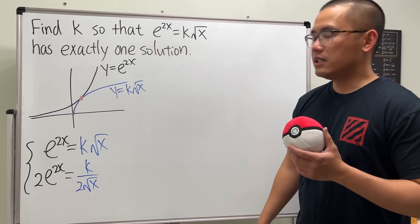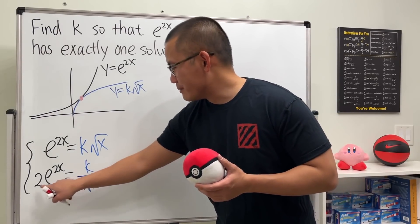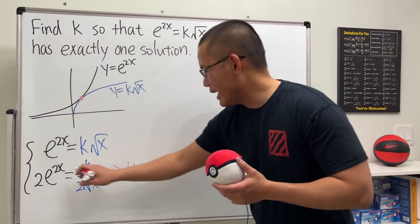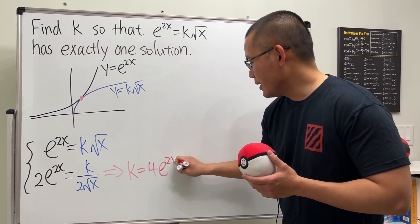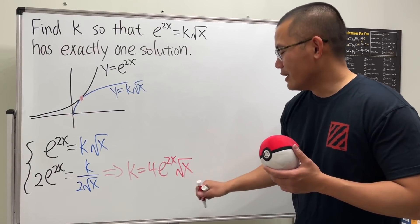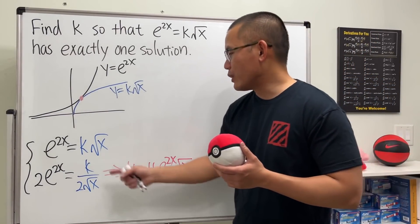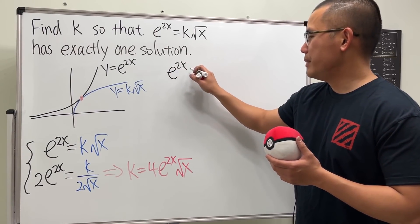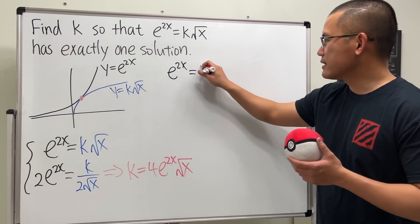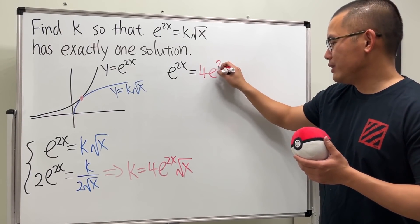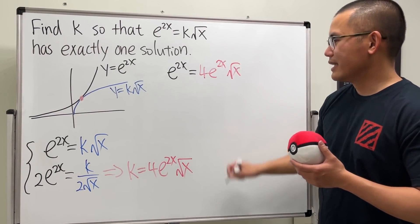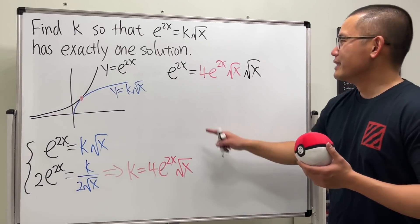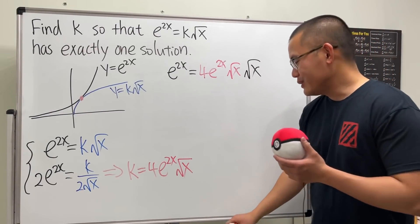Multiplying both sides of the derivative equation, we get k = 4 times e^(2x) times the square root of x. Substituting this expression for k into the original equation, e^(2x) = 4 e^(2x) times square root of x times square root of x.